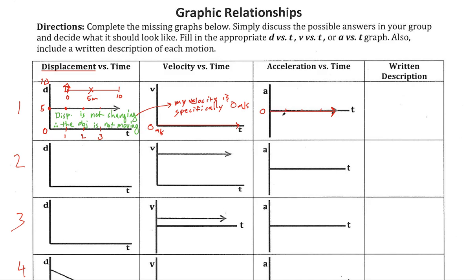So summarizing problem one: my displacement is not changing, which means the object is not moving. If the object is not moving, it has no velocity. If it has no velocity, it's not accelerating - not speeding up and not slowing down. When moving from one graph to the next, I don't even think about the previous graph anymore; I only think about the concept.